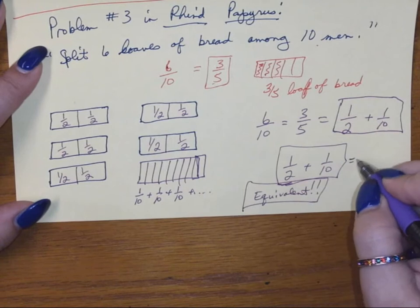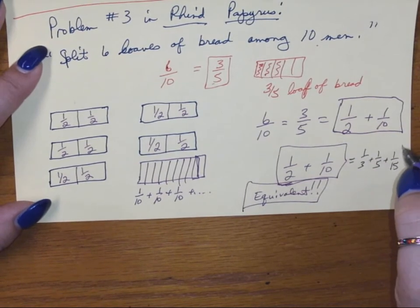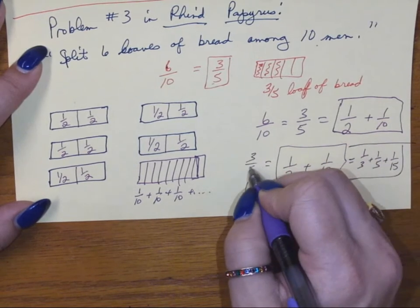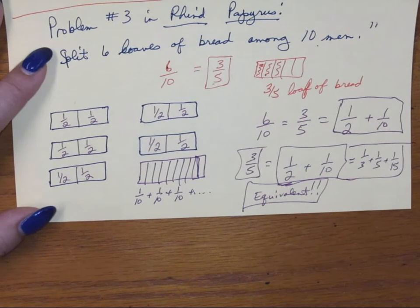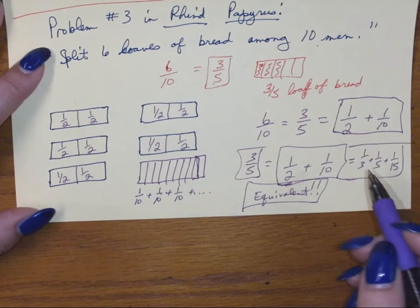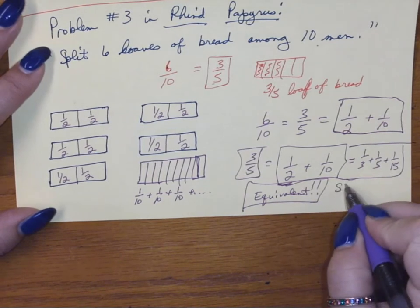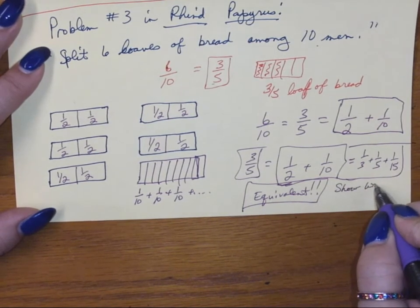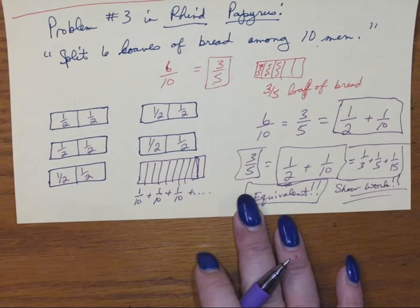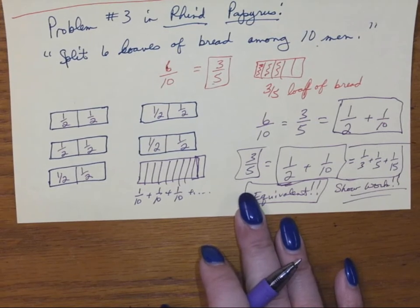So what we know is this is equivalent to 1/3 plus 1/5 plus 1/15. It's got to be because they're both equal to 3/5. So if I'm not sure, I can do a little bit of arithmetic, get some common denominators and check it, and make sure that your answer is equivalent to mine. But what you need to do in order to get me to be okay with your answer is show your work. That's the big thing. So show your work. Your answer is a correct answer; it doesn't have to be the same as mine.